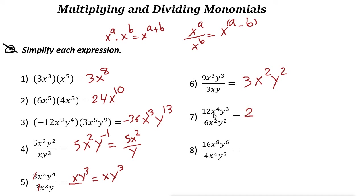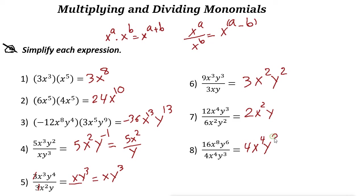X to the power of 4 over x squared gives 4 minus 2 equals 2, so x squared. Y cubed over y squared gives 3 minus 2 equals 1, so just y. For the last example: 16 divided by 4 is 4. X to the power of 8 over x to the power of 4 gives 8 minus 4 equals 4, so x to the power of 4. Y to the 6 over y to the 3 gives 6 minus 3 equals 3, so y to the power of 3.